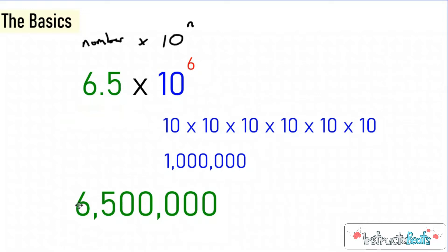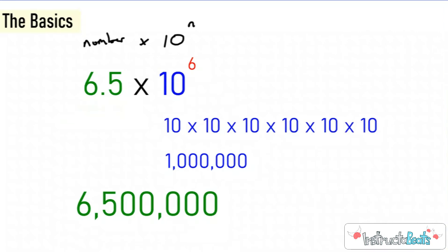Now this is a large number, but it isn't gigantically large. Typically when you're going to write numbers in scientific notation, this is going to be like 6 trillion or 6 billion where there's a lot of digits. So it makes it very quick and very easy to write scientific notation as a shortcut to represent this value.